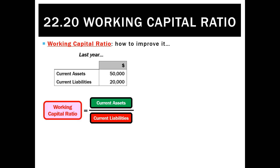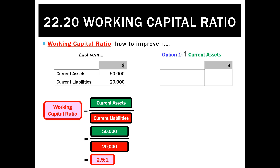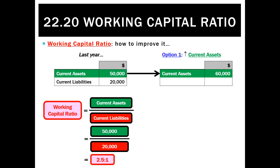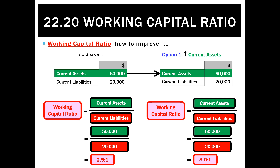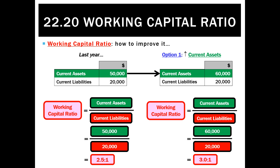How can we improve the working capital ratio? The number on top is current assets. If last year the ratio was 2.5 to 1, the first option is to increase current assets — but the trick is not to do so by increasing current liabilities, so we'd need to keep current liabilities the same, meaning not buying things on credit. The best way is to sell things and get cash, because cash is a current asset. If current assets went up to $60,000 while current liabilities stayed at $20,000, we'd end up with a ratio of 3.0 to 1 — improved liquidity.